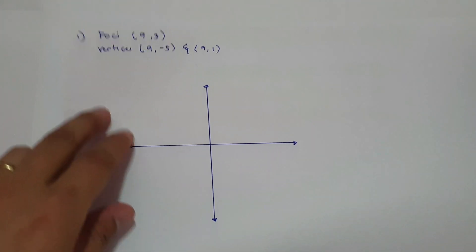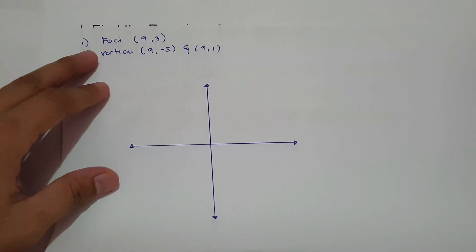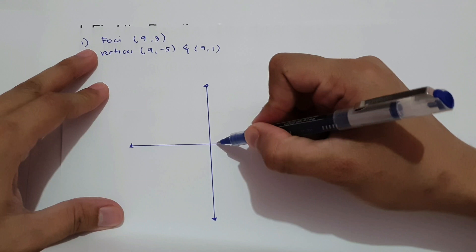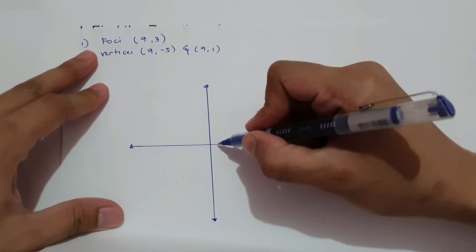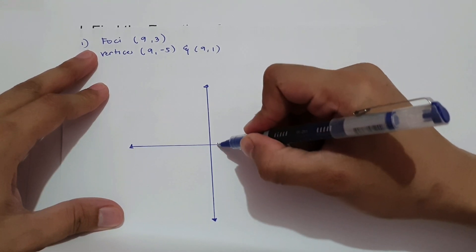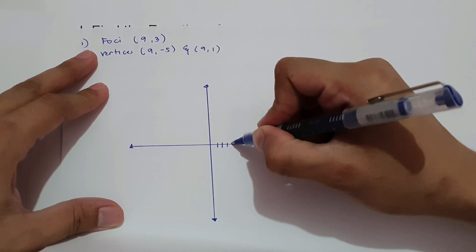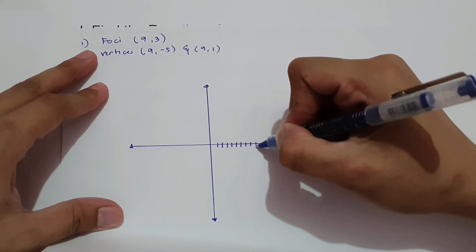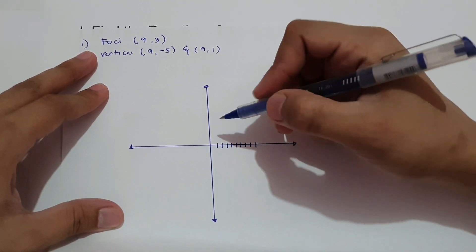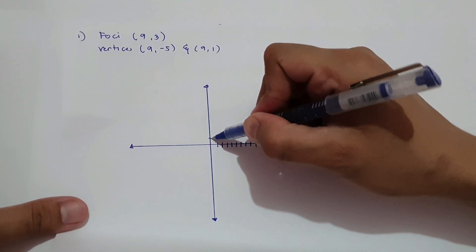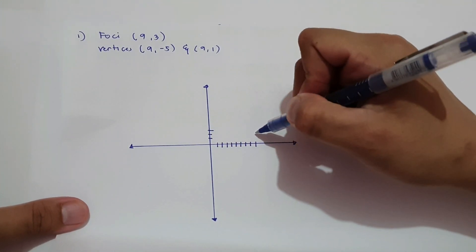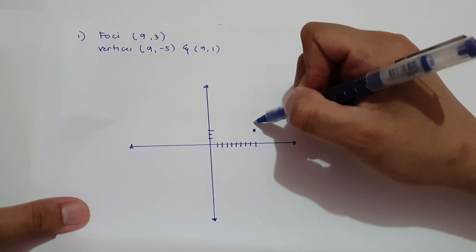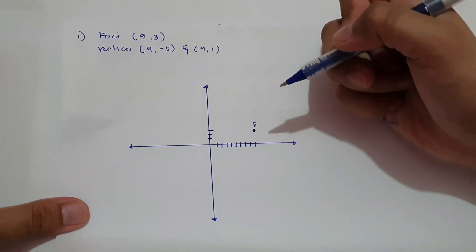First, we have foci at (9, 3). Let us plot the foci — that is 9 units to the right and 3 units up. So this is our foci at (9, 3).